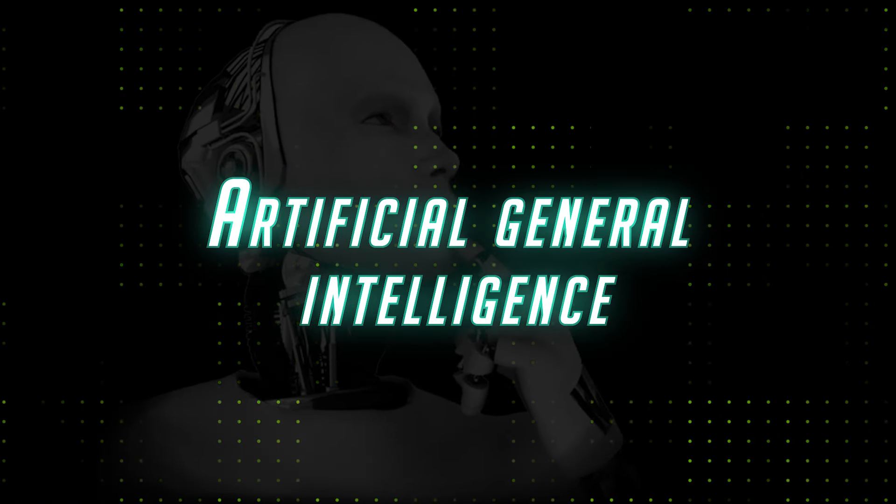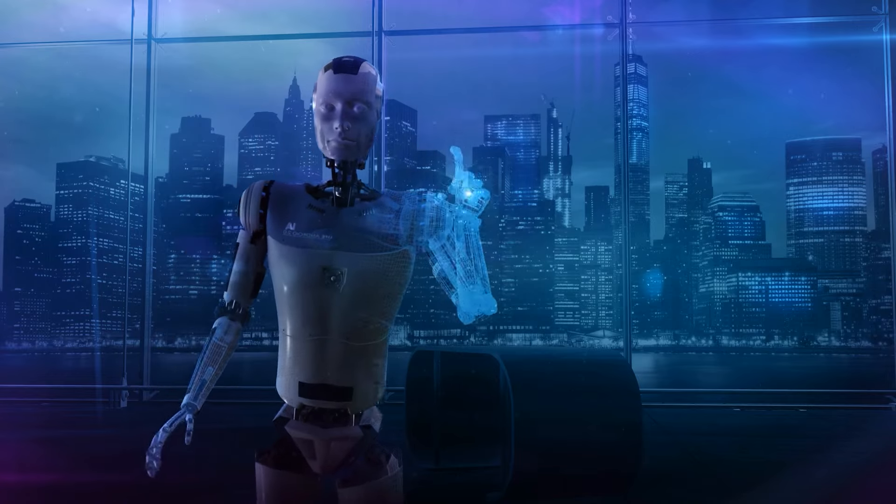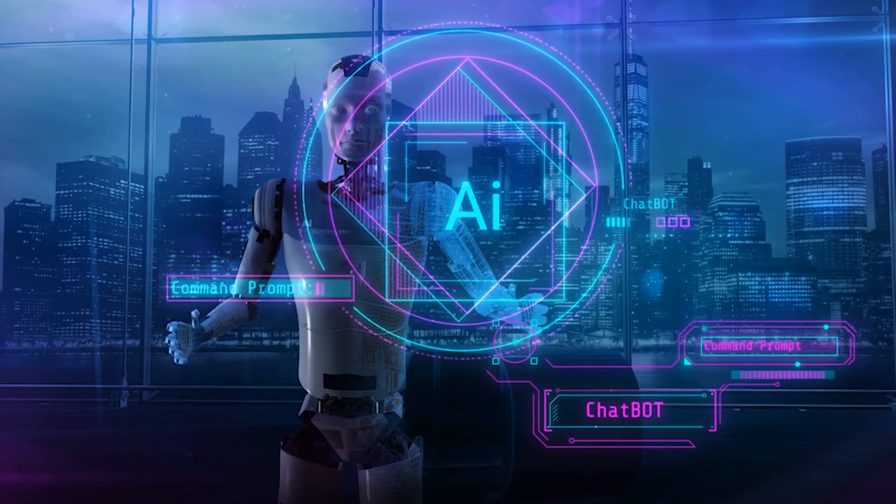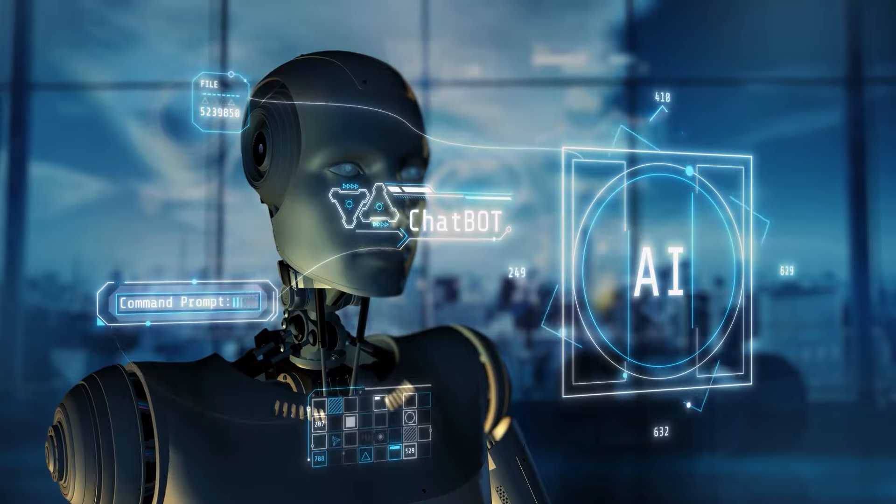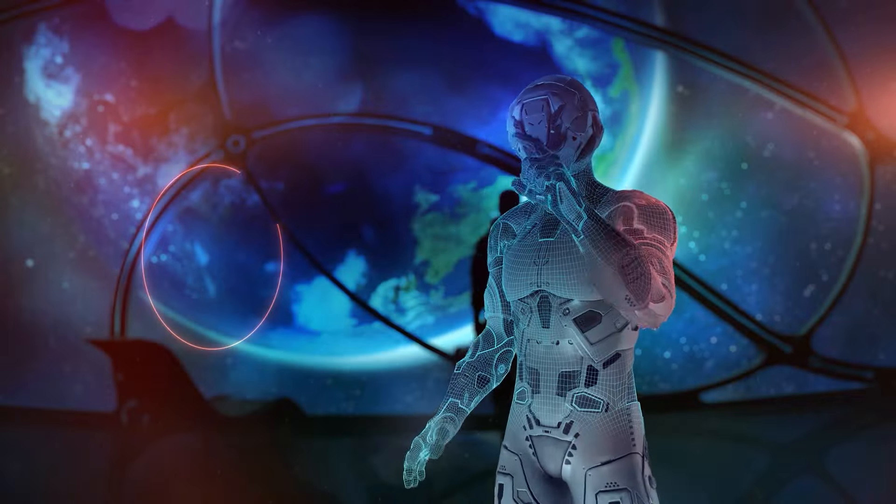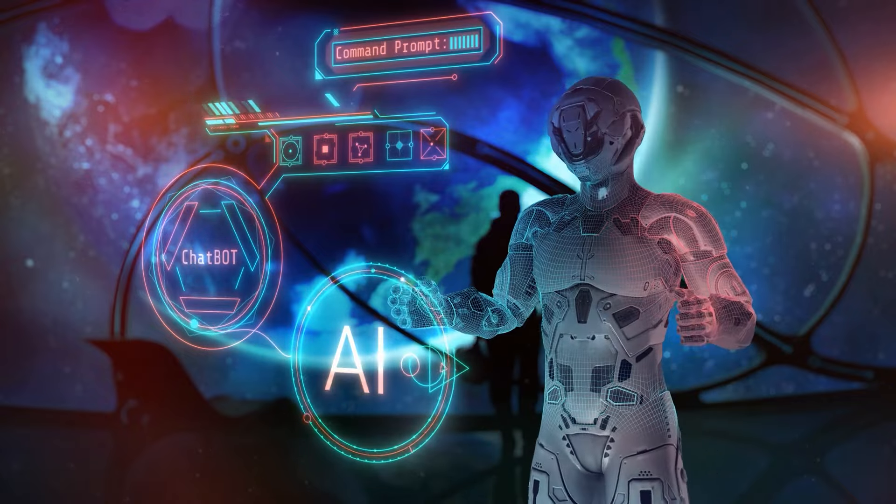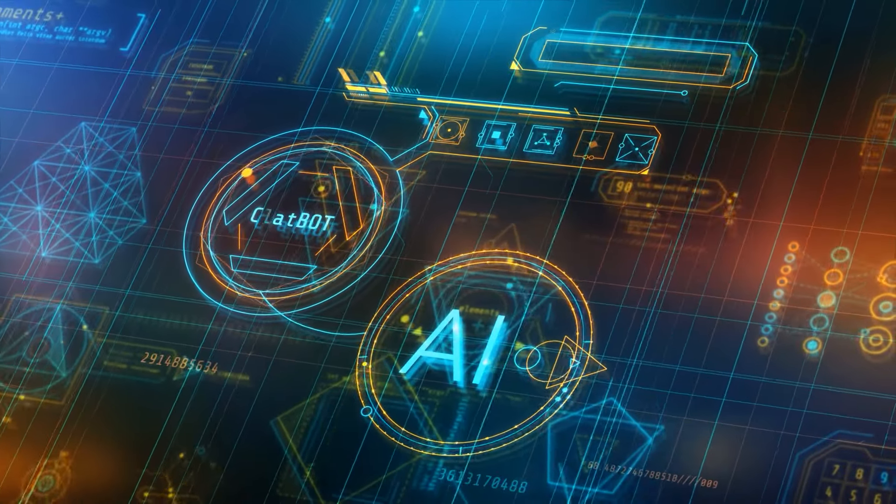Number eight, Artificial General Intelligence. Over the next five years, the field of artificial intelligence is poised to make remarkable strides, potentially culminating in the emergence of Artificial General Intelligence, or AGI. AGI represents a level of AI sophistication where machines possess the ability to understand, learn, and apply knowledge across diverse domains, just like human cognitive capabilities.